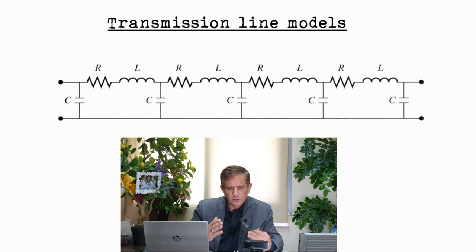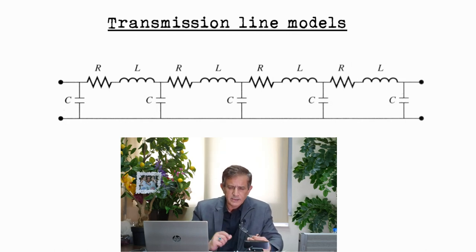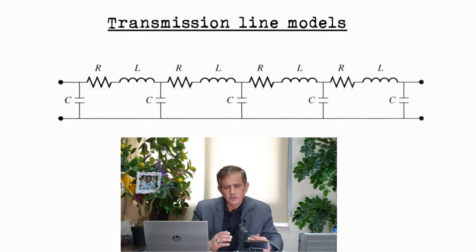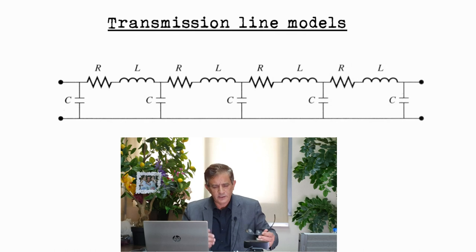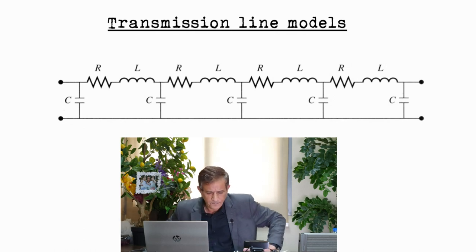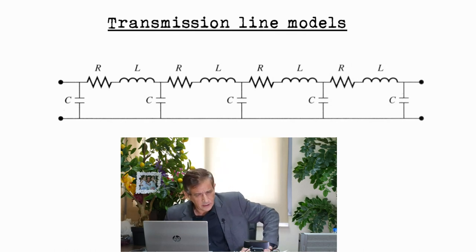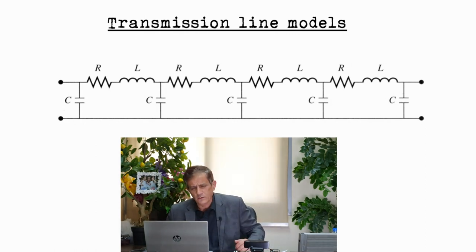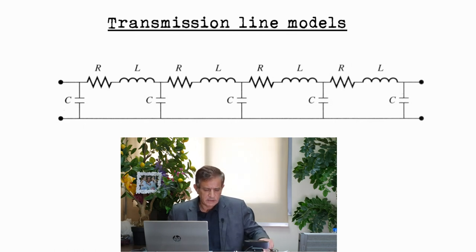We can divide the transmission line into parts, each of them having series resistance, series inductance, and shunt capacitance. We can do this and it may give more accurate results than considering the entire resistance, inductance, and capacitance of the transmission line. But this procedure — whether using this lumped approach or differential equations — is very complicated.